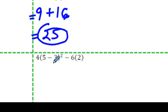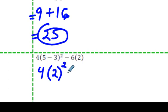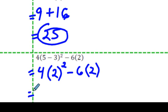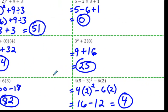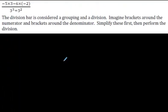This question here is kind of like the first one. Let's do the brackets first. 5 minus 3 is 2. Squared minus 6 times 2. 2 squared — that's like saying 2 times 2 is 4. And 4 times 4 is 16. Minus 6 times 2 is 12. The final answer here should be 4. Let's move on to the next page because time is of the essence.